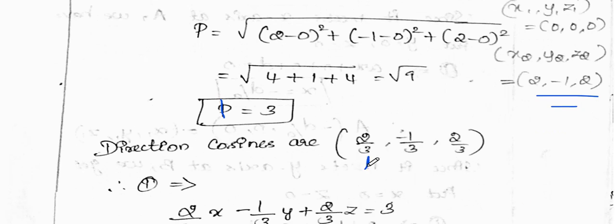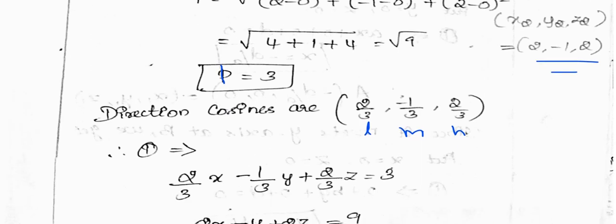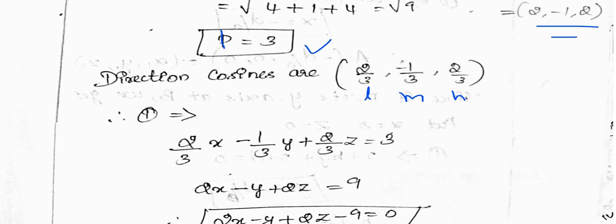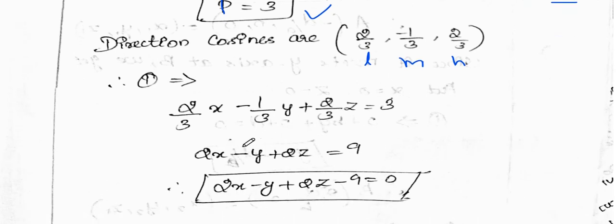So we have the direction cosines and the equation Lx + My + Nz = P, where P = 3. Substituting L = 2/3, M = -1/3, N = 2/3: multiply through by 3 to cancel the denominator, giving 2x - y + 2z = 9, so 2x - y + 2z - 9 = 0.